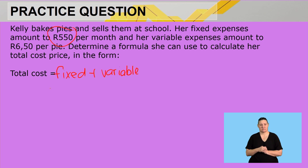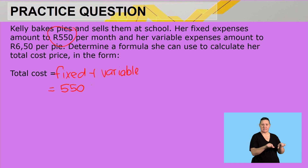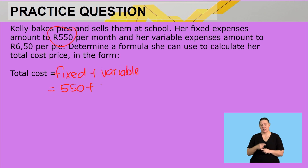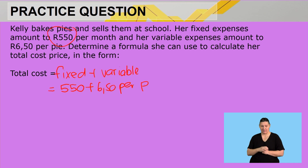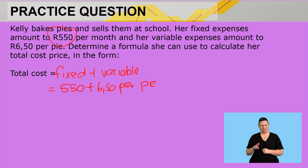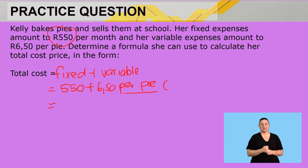A fixed cost is constant, so that is R550 plus a variable cost of R650 per pie. But we never use the words 'per' or whatever follows in an equation. We need to substitute 'per pie' with an N.